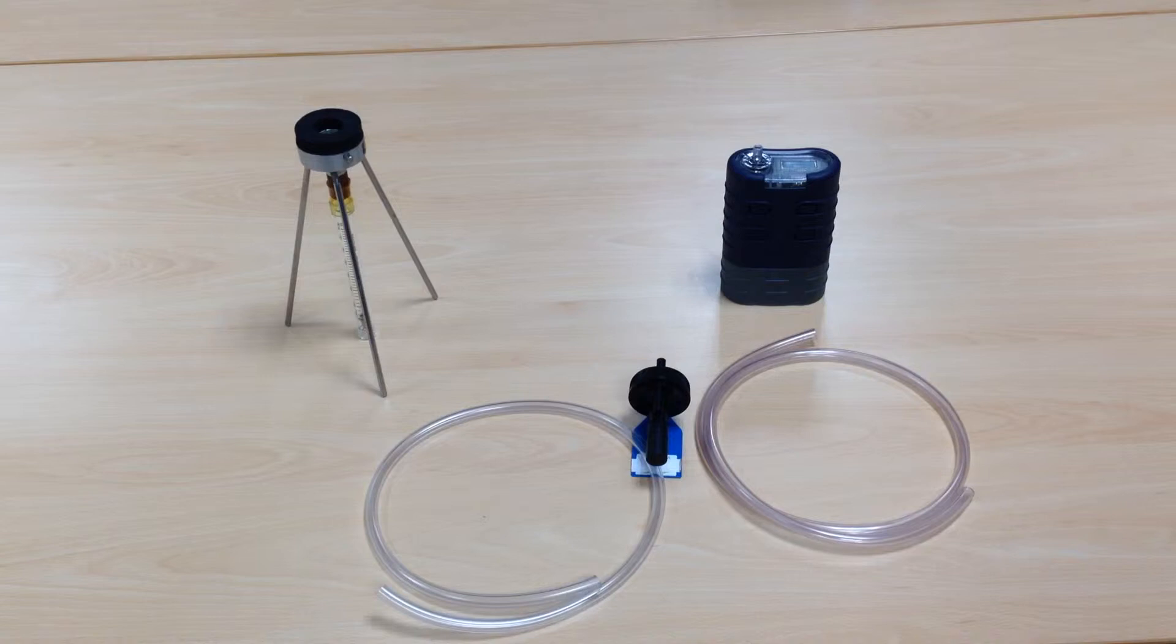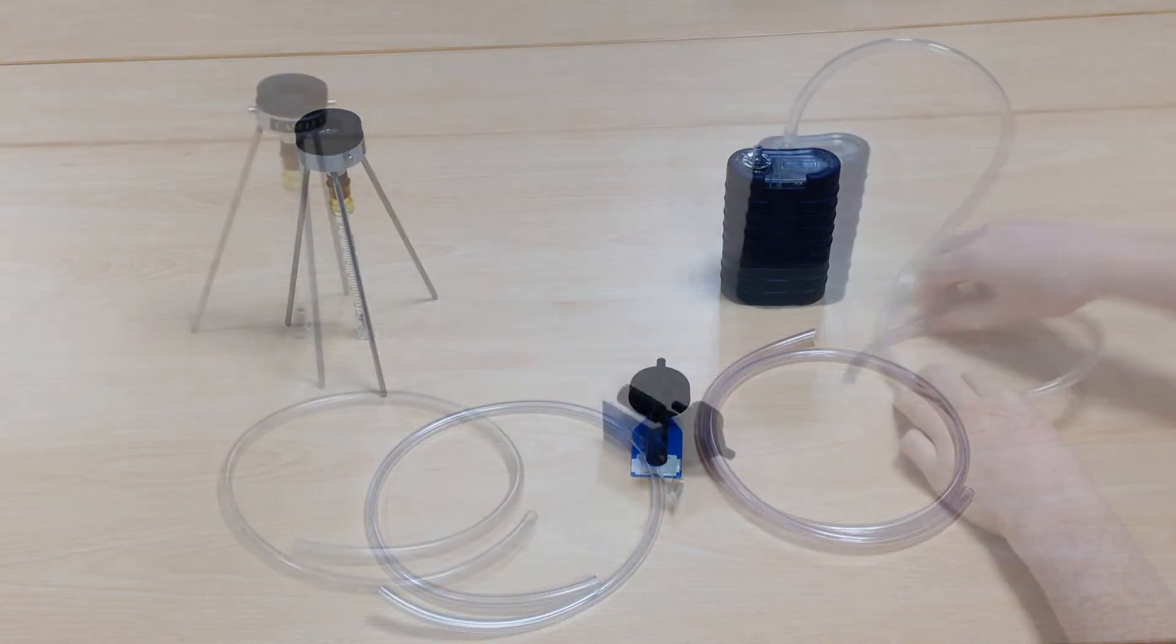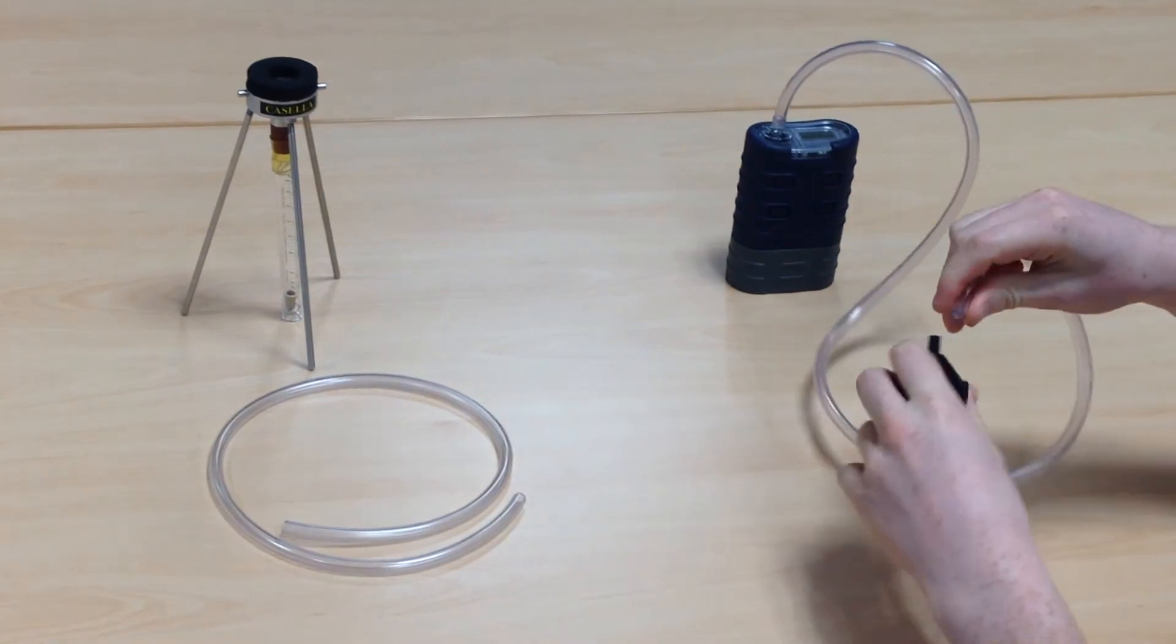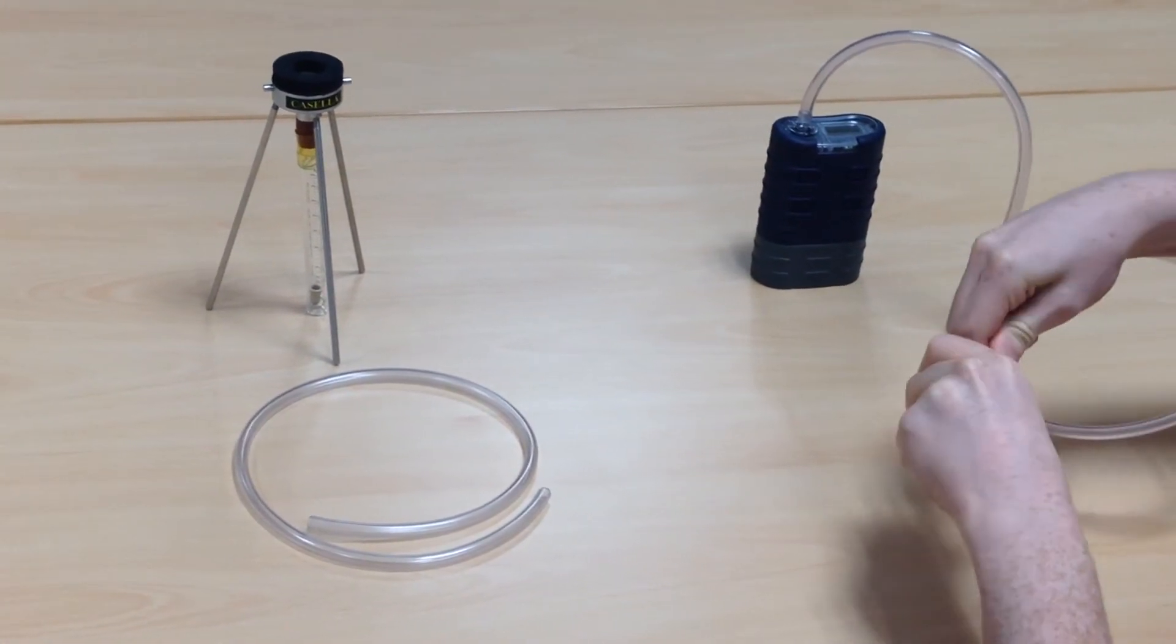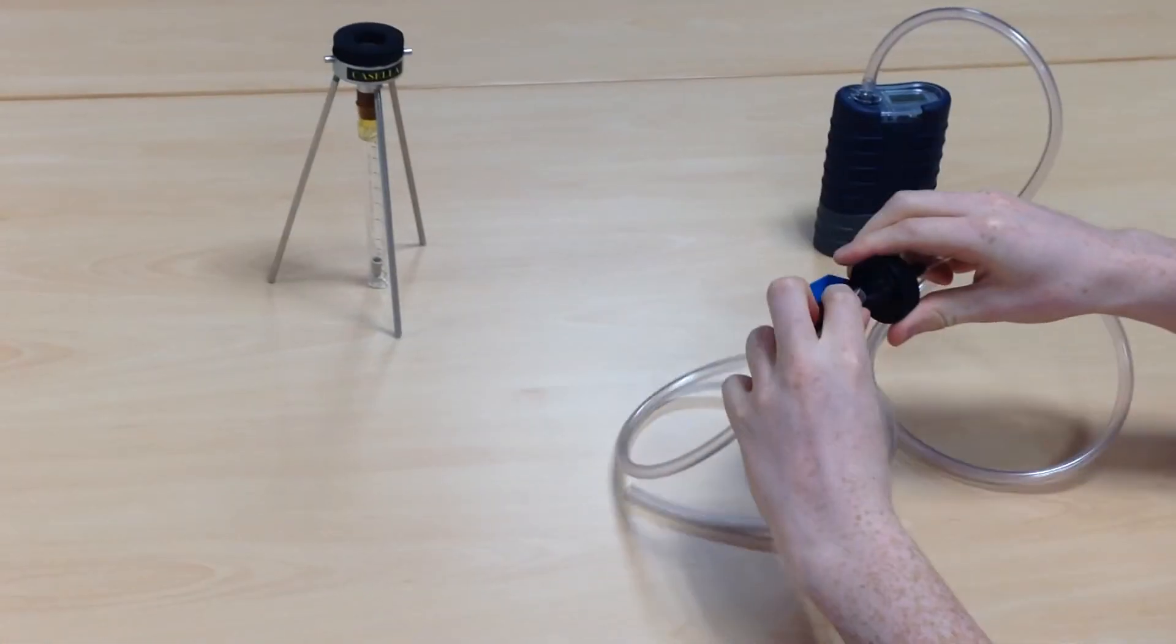After placing the filter media into the Higgins Dual Cyclone sampling head, attach the Tigon tubing to the pump and then attach the same piece of Tigon tube into the outlet of the sampling head.